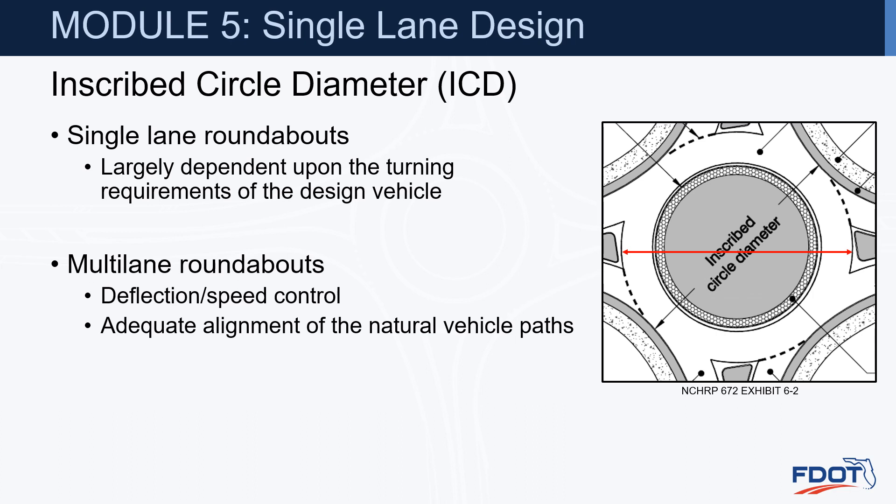In multi-lane roundabouts, we still have to accommodate the design vehicle, but controlling entry speeds is going to be a little bit harder. We also have to provide adequate alignment of the natural vehicle paths — in other words, we're going to have to make sure that we don't have path overlap as well.